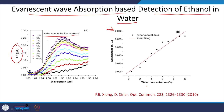So, till now we have seen what an evanescent wave is, what role absorption plays in making evanescent wave absorption sensors, and discussed a few sensors based on this technique. Now let us look at dispersion, which is also a very important optical parameter enabling various sensing mechanisms.